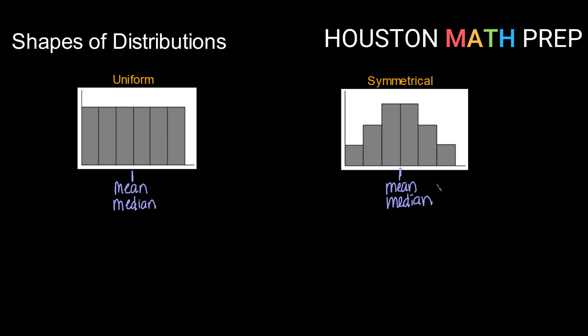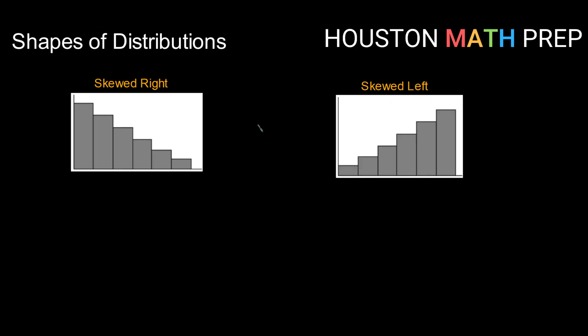Of course, not every distribution is nice and symmetrical, so we want to look at what happens to those measures of center if we aren't quite symmetrical. There are lots of different asymmetrical distributions, but two common ones we're going to encounter are a skewed right and a skewed left distribution. When we talk about something being skewed, that is simply the opposite of being symmetrical. The direction that we claim the skew to be in is towards what we would call the tail — so we skew to the tail.